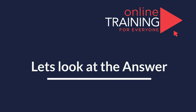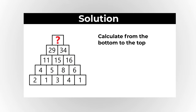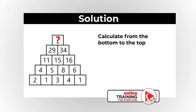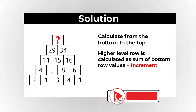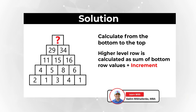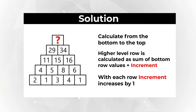Tricky problem, don't you think so? But the solution to this challenge is really simple. To calculate it correctly, you need to move from the bottom to the top. If you look closely at the pyramid, you will notice that the higher row is calculated as the sum of bottom values plus an increment, and that increment also increases with each row by one.